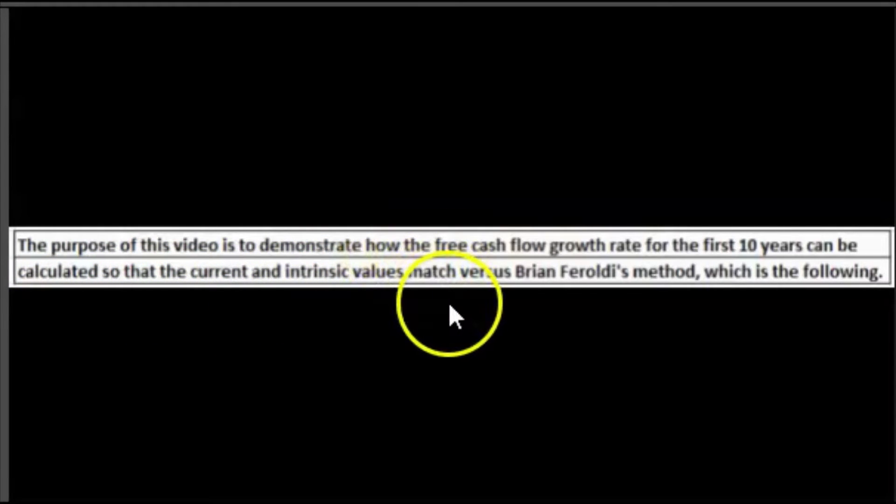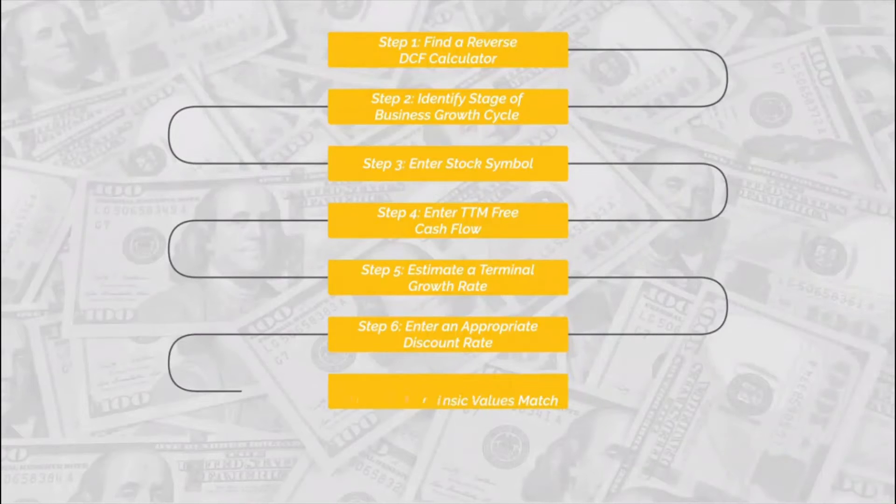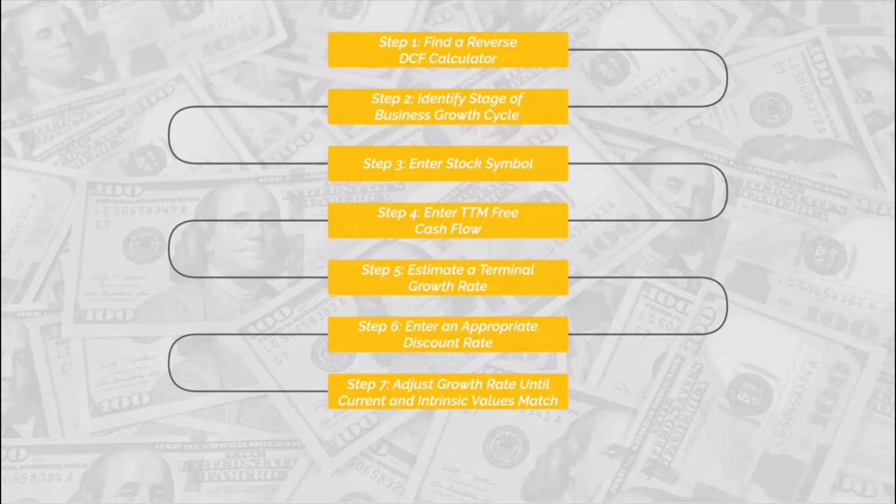The purpose of this video is to demonstrate how the free cash flow growth rate for the first 10 years, or step seven, can be calculated so the current and intrinsic values match — versus Brian Ferroldi's method, which involves playing with the growth rate number until the current and intrinsic values match. We're going to be inputting different growth rates for Google's free cash flow over the next 10 years, which will change its estimated intrinsic value, until the current share price and estimated intrinsic value match.